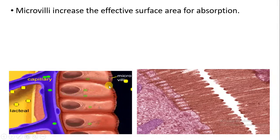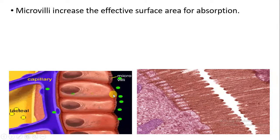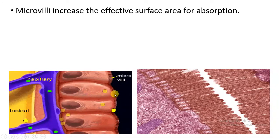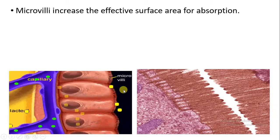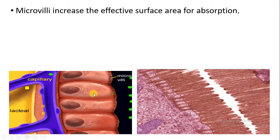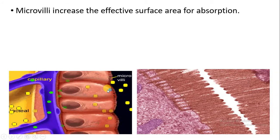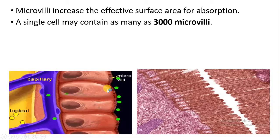Because of the microvilli, the surface area is enhanced. More surface area means more absorption will take place. That is why they are present mostly in the intestine, leading to more and more absorption of the nutrient content from the intestinal cells.